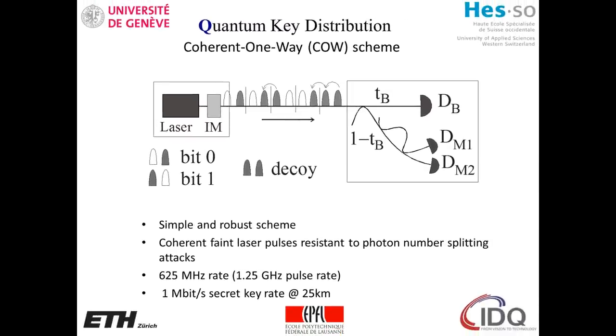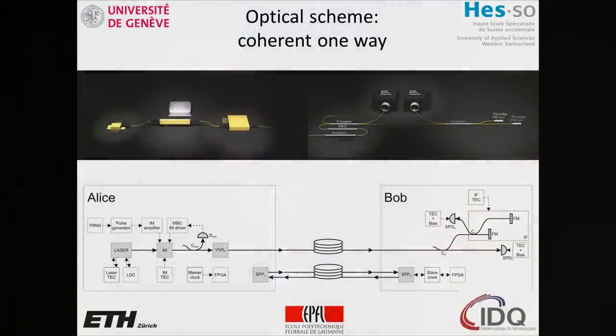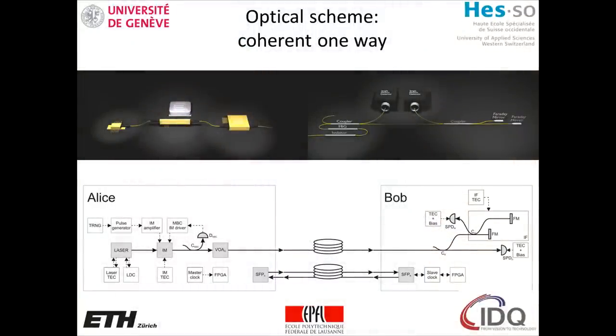In order to work on this we have different components: the laser, the modulator, and the attenuator on one side, and then on the other side a Michelson interferometer — not a Mach-Zehnder, but the same principle — and then the single photon detectors.